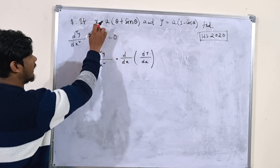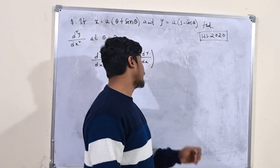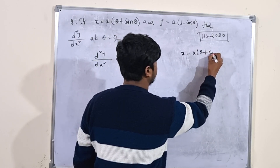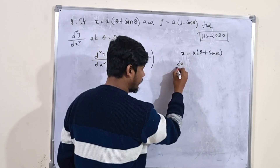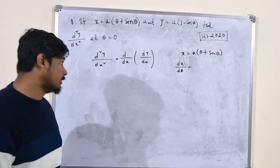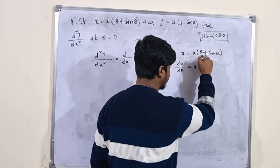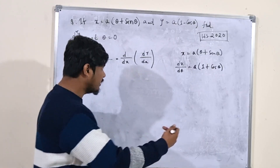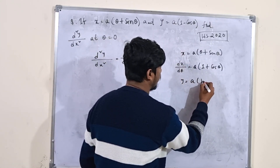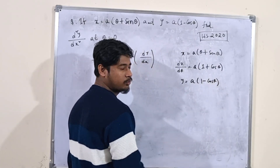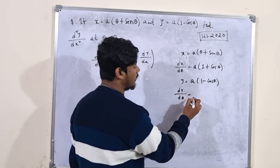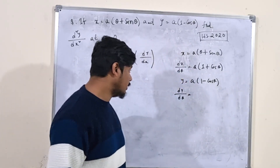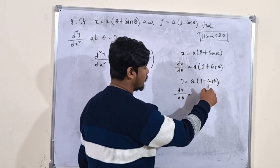Since x and y are functions of theta, we differentiate with respect to theta. dx/dθ = a(1 + cosθ), since the derivative of θ is 1 and the derivative of sinθ is cosθ. Next, for y = a(1 − cosθ), we find dy/dθ: a is a constant, so its differential is 0, and the derivative of cosθ gives us minus sinθ.